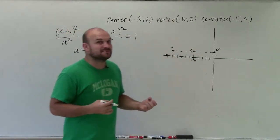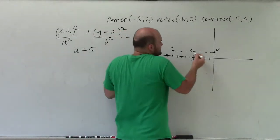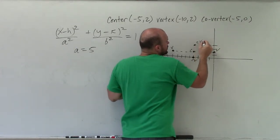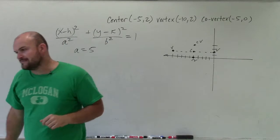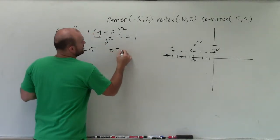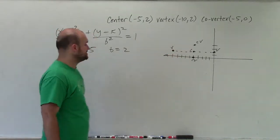b is the absolute distance from the center to your co-vertex, which again is an absolute distance. I go down 2, I can also go up 2 to find my other co-vertice. So b is equal to 2, just counting the dots, you can be able to see that.